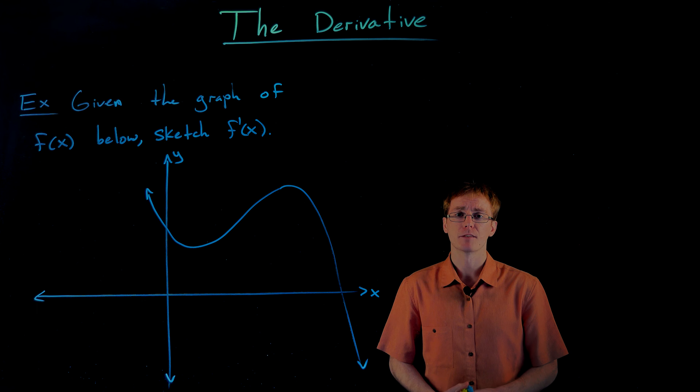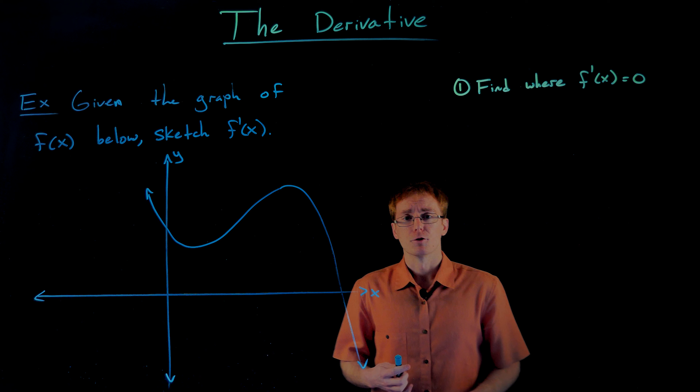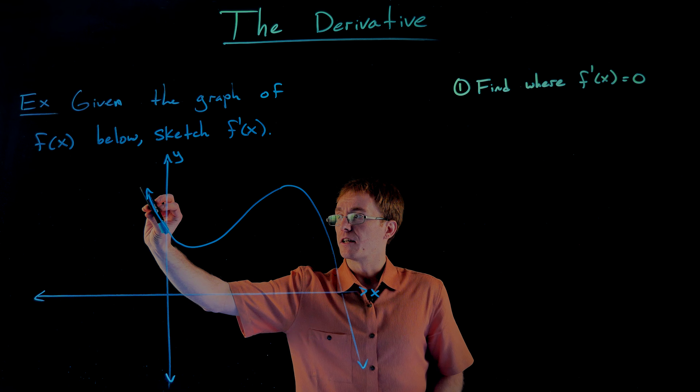To do that we have to remember one of our interpretations of the derivative as the slope of a tangent line at a particular point. So to find out where the derivative is equal to zero, we have to think about where the tangent lines throughout our function have a slope of zero. A slope of zero means no change in y with some change in x — no vertical change — that's going to produce a horizontal line. So we're thinking about where would our tangent line be horizontal? That's where the derivative equals zero.